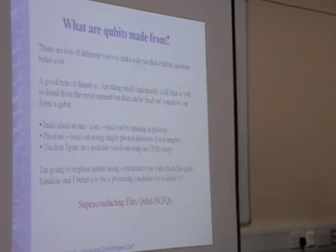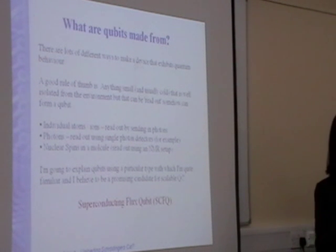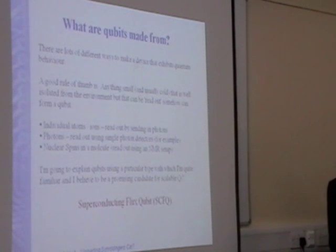I'm going to talk about one particular type of qubit, which is a superconducting flux qubit. There are some other variations that you can use to make quantum systems. For example, individual atoms or ions can be manipulated by sending photons and getting these to excite the energy levels of the atoms. You can use two energy levels in an atom to represent bits of information.